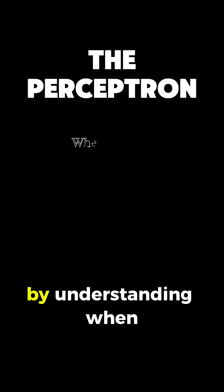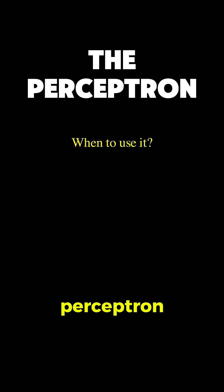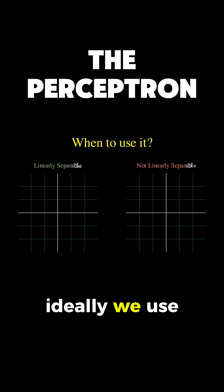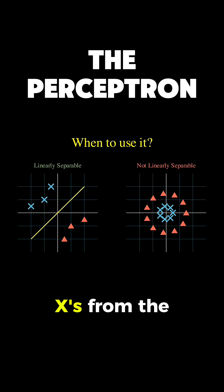Let's start by understanding when to use a perceptron. Ideally, we use it when our data is linearly separable. On the left, we have a dataset where we can clearly draw a straight line to separate the axes from the triangles. This is linearly separable.